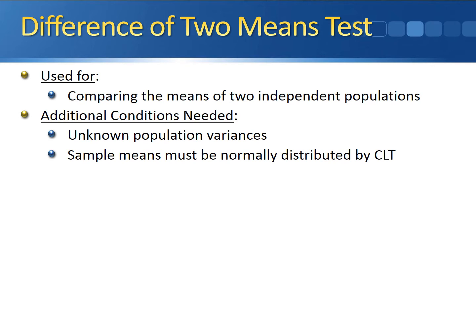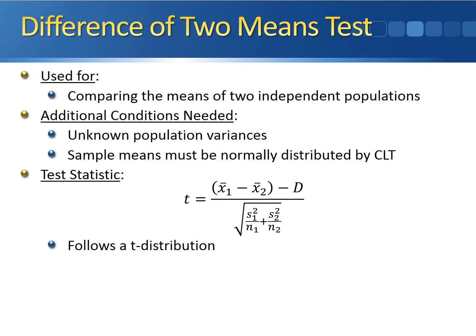First, the population variances have to be unknown. Second, the sample means must be normally distributed by the central limit theorem — either we take a large enough sample size from each population, or the original populations have to be normally distributed. If these two conditions hold, the test statistic follows a t-distribution and is calculated by taking x1 bar minus x2 bar, subtracting the hypothesized difference d. d is the difference we think might exist between the two population means — most of the time d equals zero. In the denominator, we have the square root of s1 squared divided by n1 plus s2 squared divided by n2.